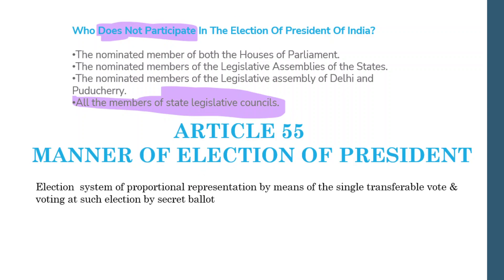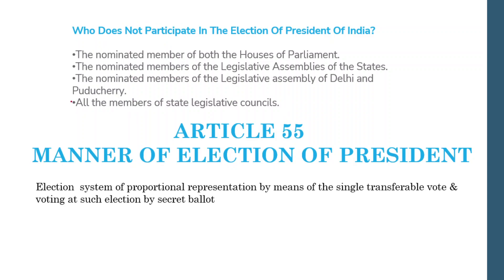Article 55 basically talks about the manner of election. The election follows the system of proportional representation by means of single transferable vote, and voting at such election is by secret ballot.